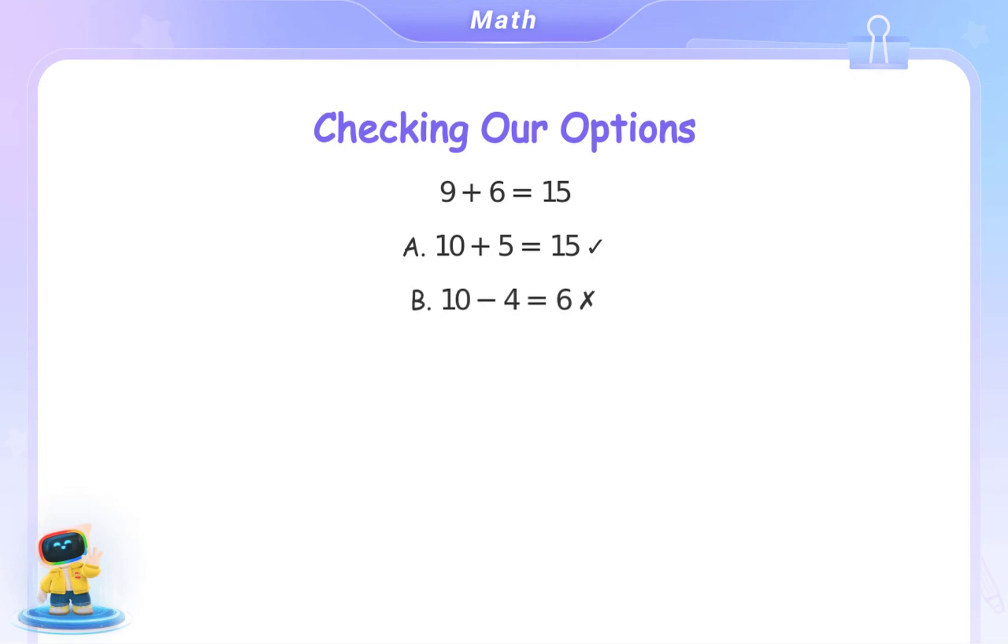Option B: 10 minus 4 equals 6. This is not 15. Option C: 10 plus 7 equals 17. This is not 15.